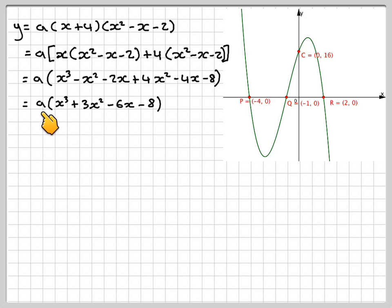In order to find the a, we need to know the coordinates of one other point on the curve, so the only other point we have is the y-axis at 0, 16. So consider the y-intercept, so this is the y-axis, so that's going to be when x is 0, y is equal to 16.